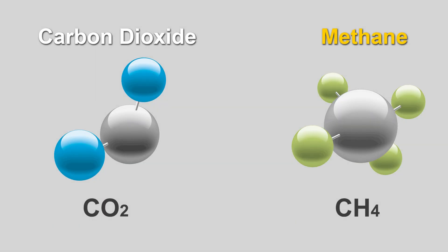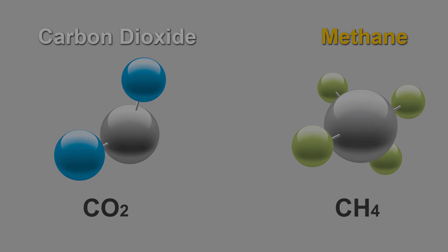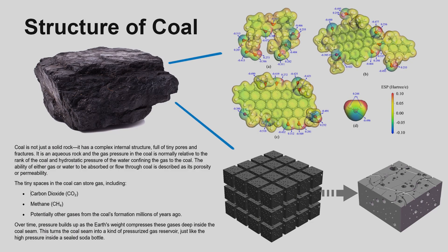Carbon dioxide is a compound molecule of carbon and oxygen, and methane is a compound molecule of carbon and hydrogen. Coal is not just a solid rock — it has a complex internal structure full of microscopic pores and fractures. It's an aqueous rock, and the gas pressure in the coal is normally relative to the rank of the coal and the hydrostatic pressure of the water confining the gas to the coal. The ability of either the gas or the water to be absorbed or flow through the coal is described as its porosity or its permeability.